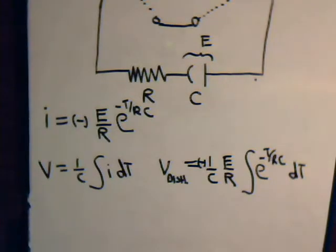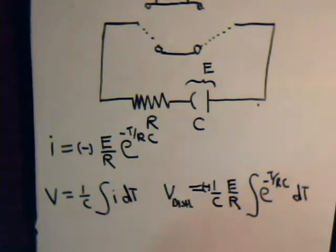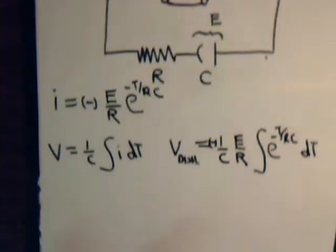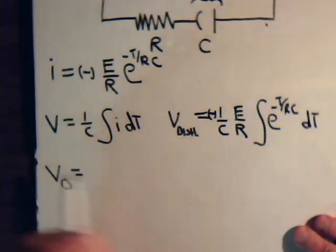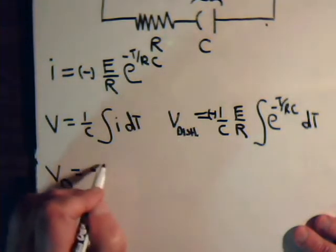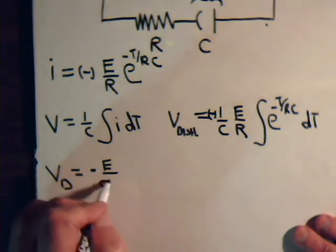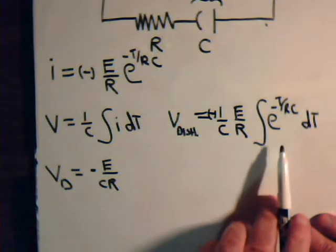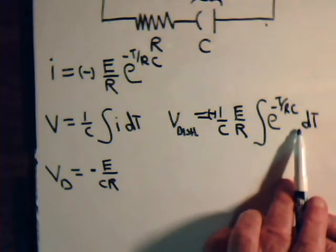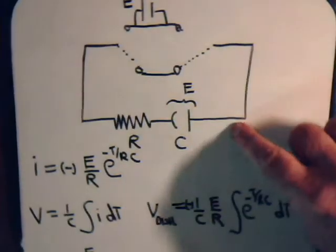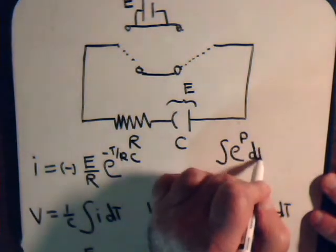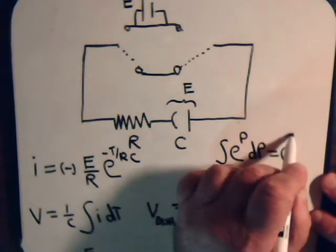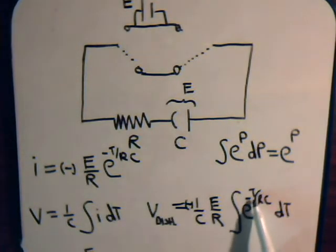We're deriving an expression for the discharge voltage. The capacitor starts off with the battery voltage. We know in general that the integral of e^p dp is just e^p. Here we have e to the minus t over RC with dt, so we do a substitution.